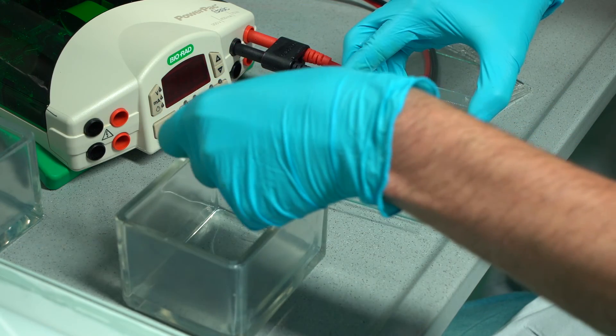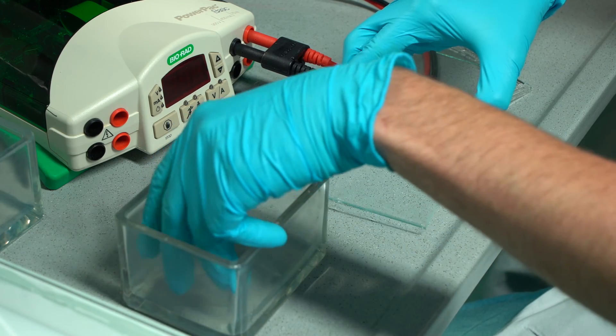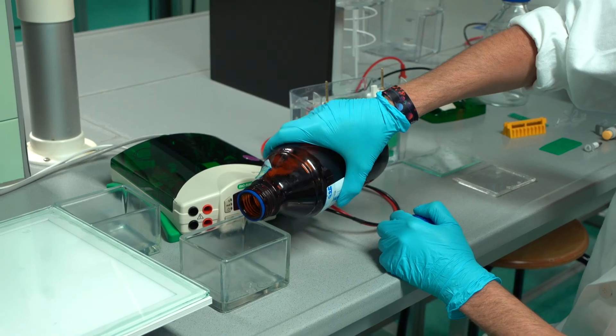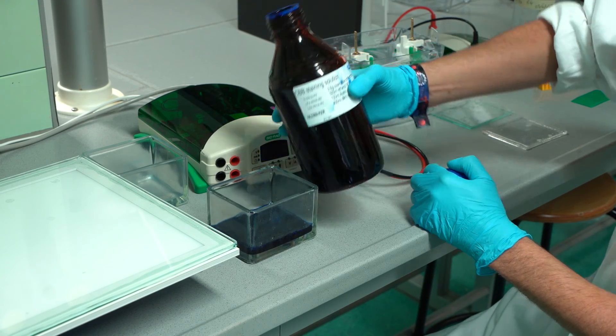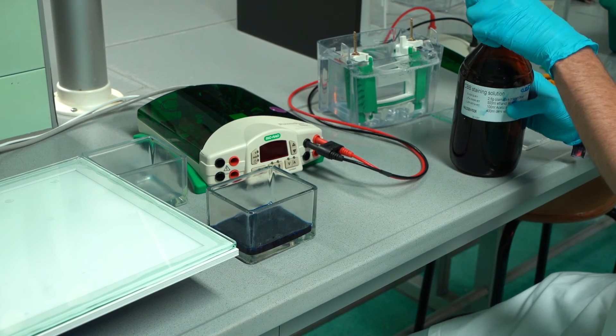Place the gel into a container and add CBB staining solution until the gel has completely been covered. Stain the gel for at least half an hour. Make sure that the gel does not float to the surface during staining.